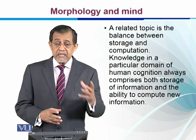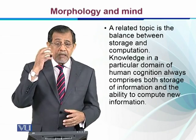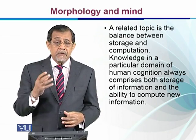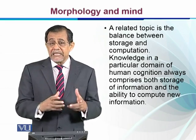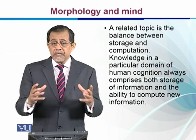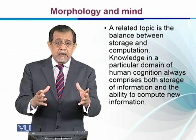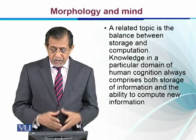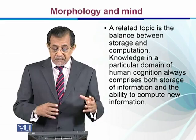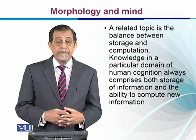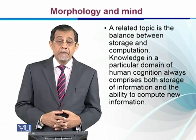How we recognize, how we produce, or how we store knowledge in our mind — where does it go — and how we compute and calculate different things, how we bring different pieces of words together to make complex words. Knowledge in a particular domain of human cognition always comprises both storage of information and the ability to compute new information.